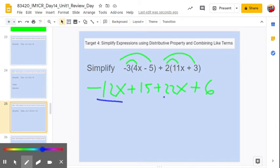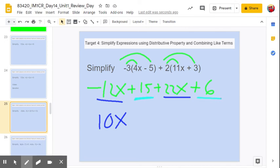Negative 12x and 22x becomes 10x. Then we combine 15 and 6. Positive 15 plus 6 is positive 21. So 10x plus 21.